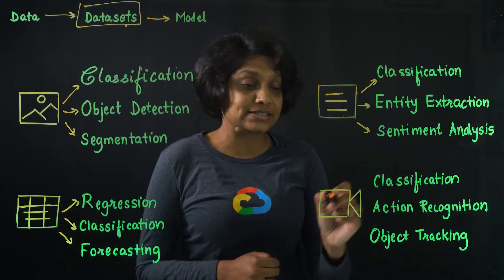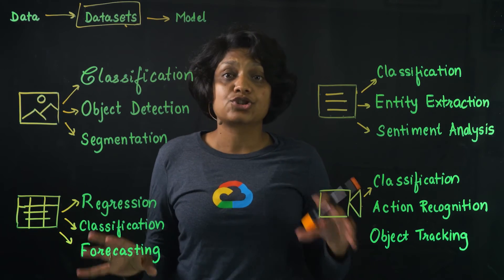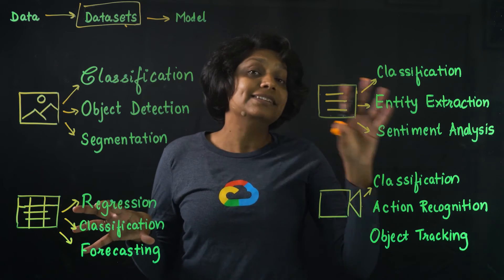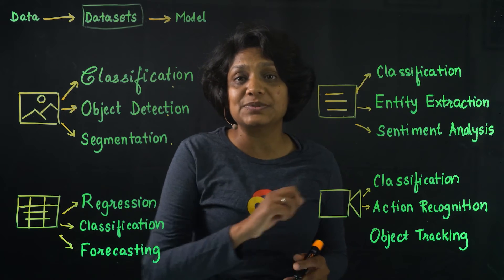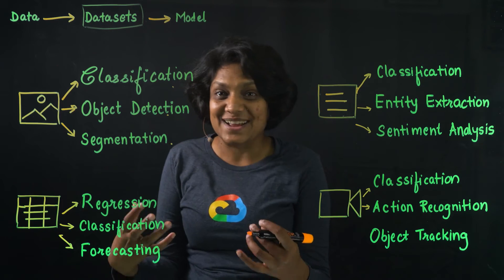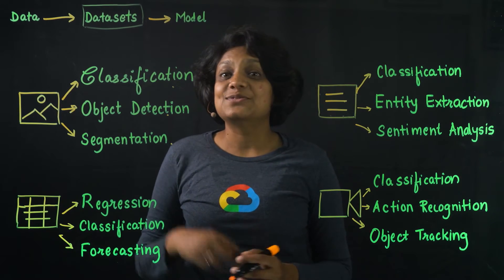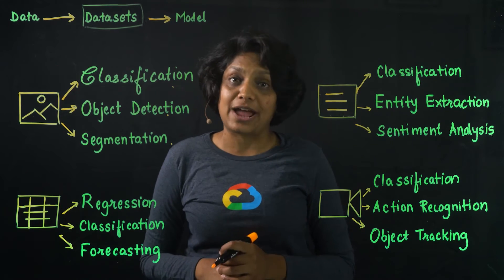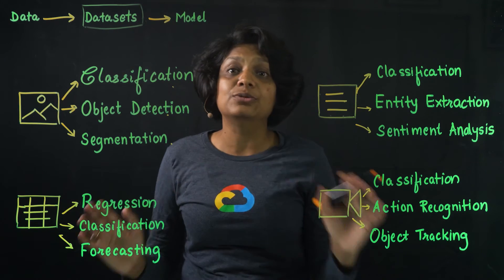Video data sets currently support classification, which provides label predictions for entire video shots and frames — for example, in a football game, labeling sections with commercials and sections with the game. Action recognition is where the model identifies clips in the video where specific actions occur, such as a dog making a touchdown in a puppy football game. Object tracking is where you get labels, bounding boxes, and timestamps for objects you want to track in a video — for example, tracking the football's motion throughout the game.